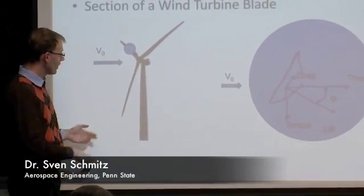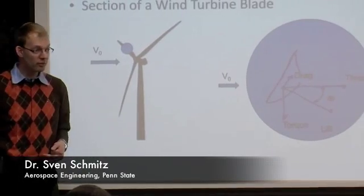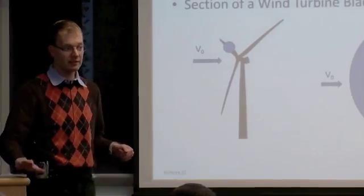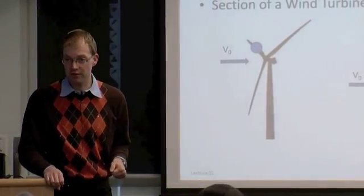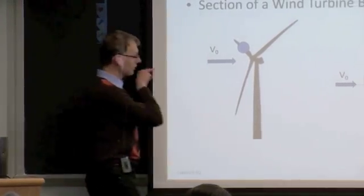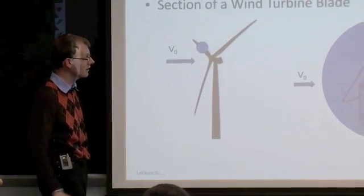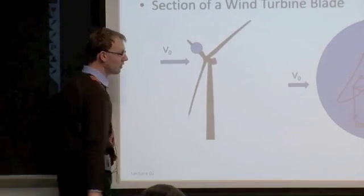We said now in BEM theory we're actually looking at individual blades, so that is important. So what's happening at an individual blade section or a strip that we cut out of the blade? Wind is coming from the left, from left to right, hitting a turbine blade. I cut out a section.